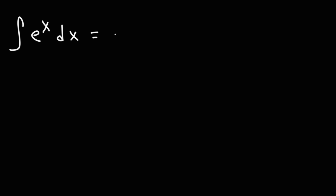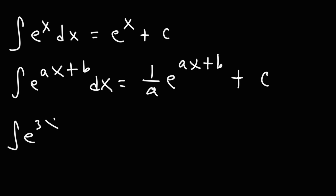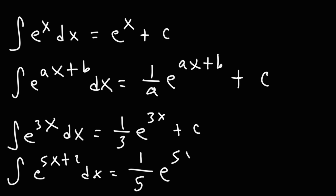For exponential functions: the integral of e to the x is e to the x. The integral of e to the ax plus b is 1 over a times e to the ax plus b, plus c. For example, the integral of e to the 3x is one-third e to the 3x plus c; and the integral of e to the 5x plus 2 is one-fifth e to the 5x plus 2, plus c.